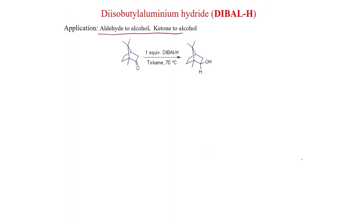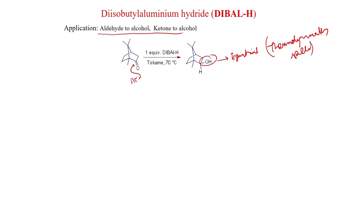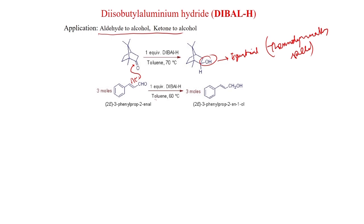A major application of DIBAL-H is aldehyde-to-alcohol and ketone-to-alcohol conversions. In this bridged ring system example, the hydride approaches from the bottom face and you get the equatorial alcohol — this is thermodynamically stable. In DIBAL-H reactions, steric factors are less important; thermodynamics governs the outcome. With an alpha-beta unsaturated aldehyde, using 1 equivalent of DIBAL-H in toluene at 60 °C, you get the allylic alcohol and the double bond is untouched.